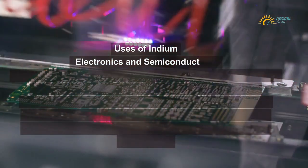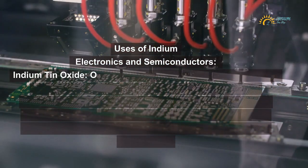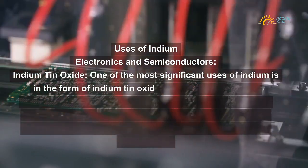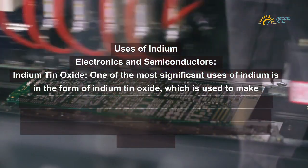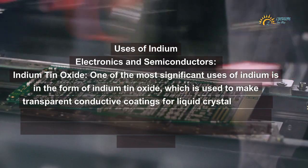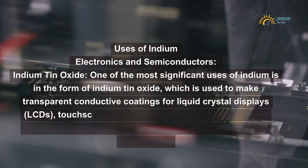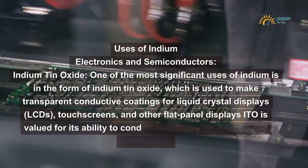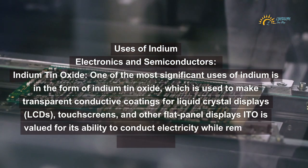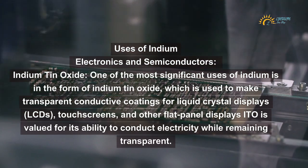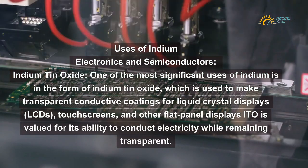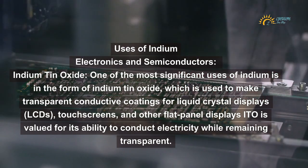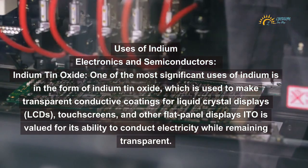Uses of indium — electronics and semiconductors. Indium tin oxide: one of the most significant uses of indium is in the form of indium tin oxide, which is used to make transparent conductive coatings for liquid crystal displays (LCDs), touchscreens, and other flat panel displays. ITO is valued for its ability to conduct electricity while remaining transparent.